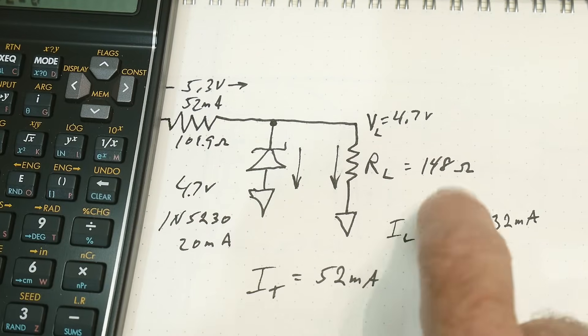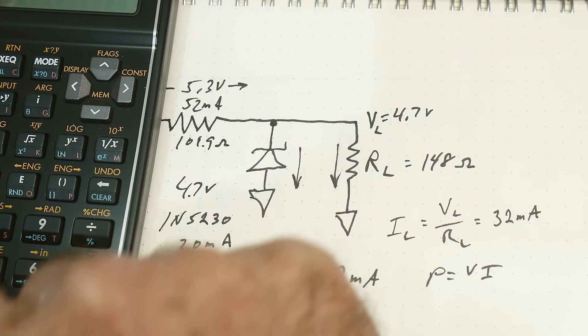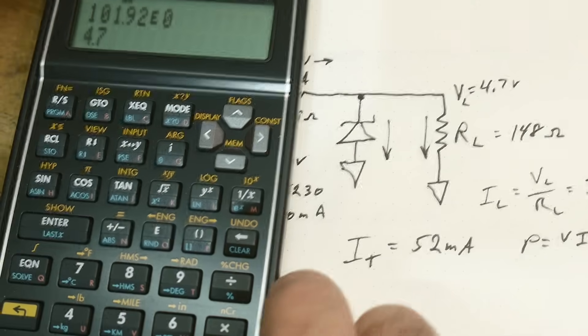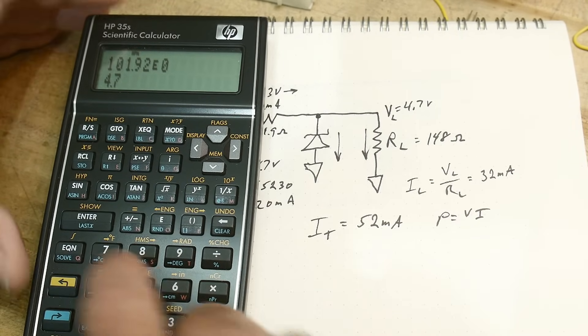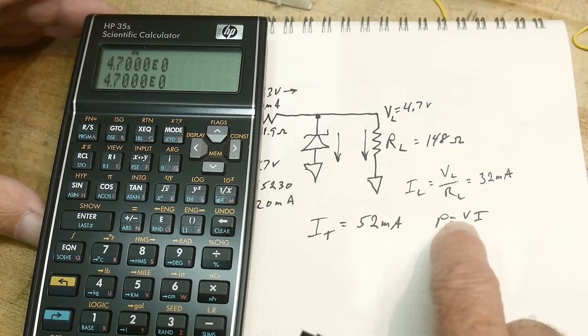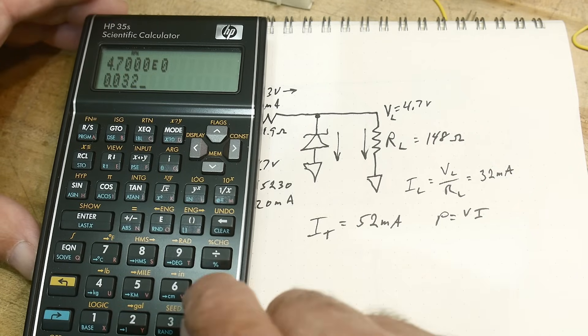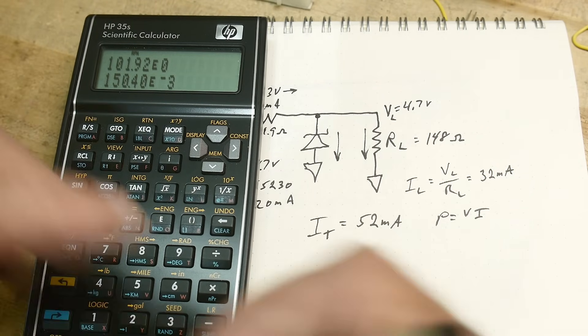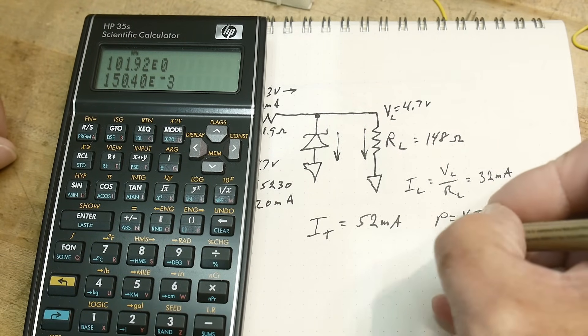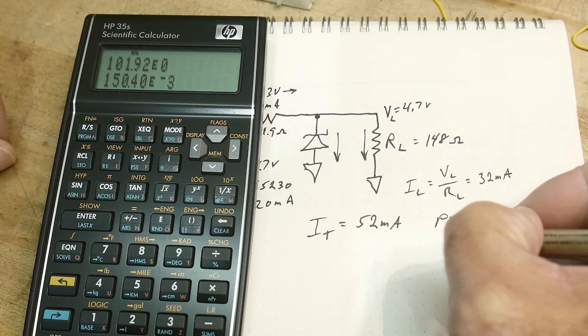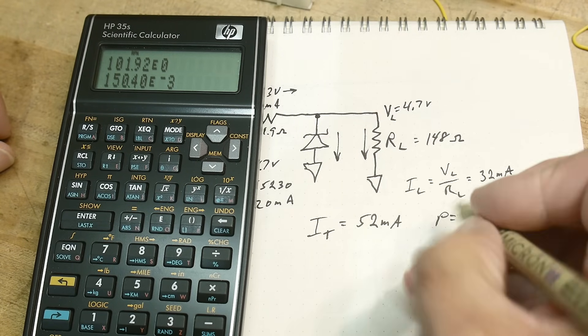Well, we have 4.7 volts, and we have 32 milliamps. So we better have 150 milliwatts over here. 150 milliwatts.